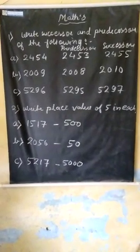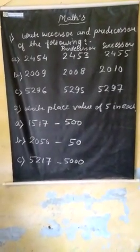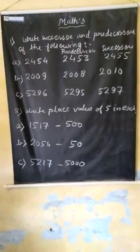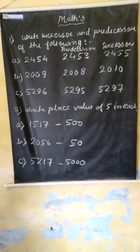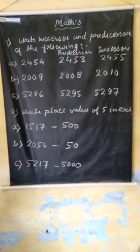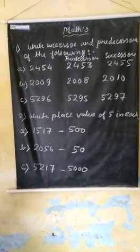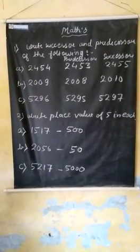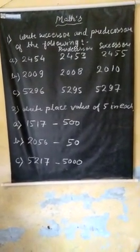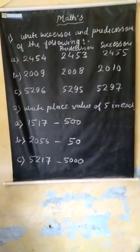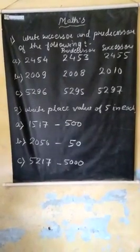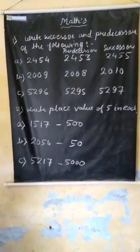Question number 2: Write the place value of 5 in each number. For the number 1517, we find the place value of 5. The place value positions are: ones place, tens place, hundreds place, thousands place. So 5 is at the hundreds place, and its place value is 500.